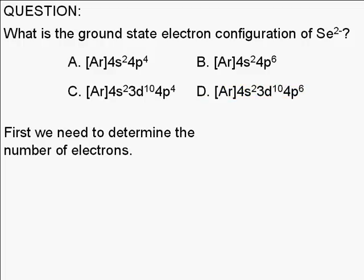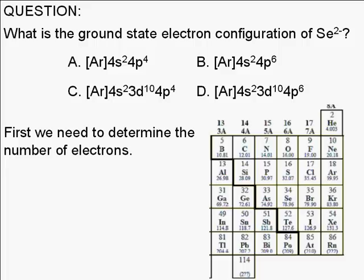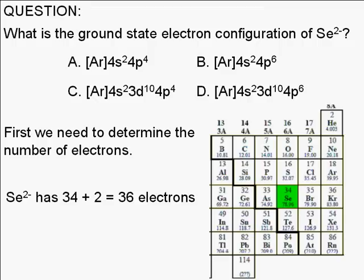First, we need to determine how many electrons the selenide ion has. Let's refer to the periodic table. Selenium is element number 34, so a selenium atom has 34 electrons. Selenium with a negative 2 charge has two additional electrons, for a total of 36.